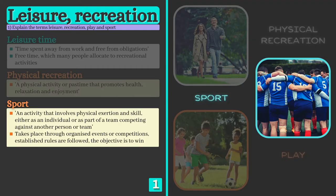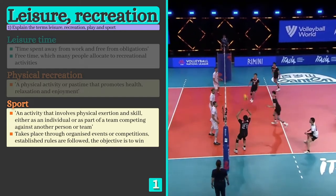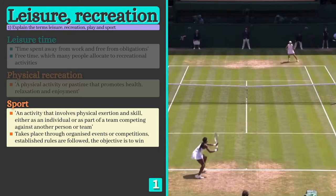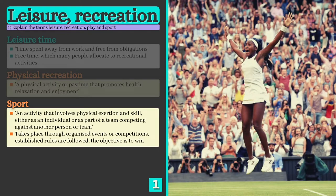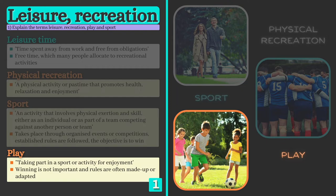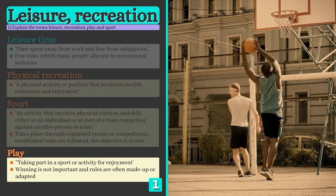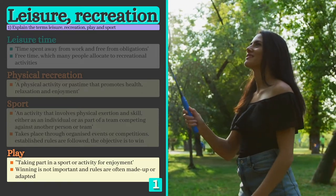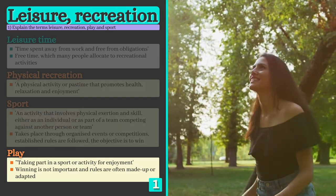Sport is an activity that involves physical exertion and skill, either as an individual or part of a team competing against another person or team. Sport is highly structured and often takes place through organized events and competitions, with performers following established rules and the primary objective being to win. In contrast, play means taking part in a sport or activity for enjoyment — winning is not important and rules are often made up or adapted to suit the preferences of those involved. Fun, relaxation and social interaction are therefore some of the main reasons why people choose play over structured sport during their leisure time.